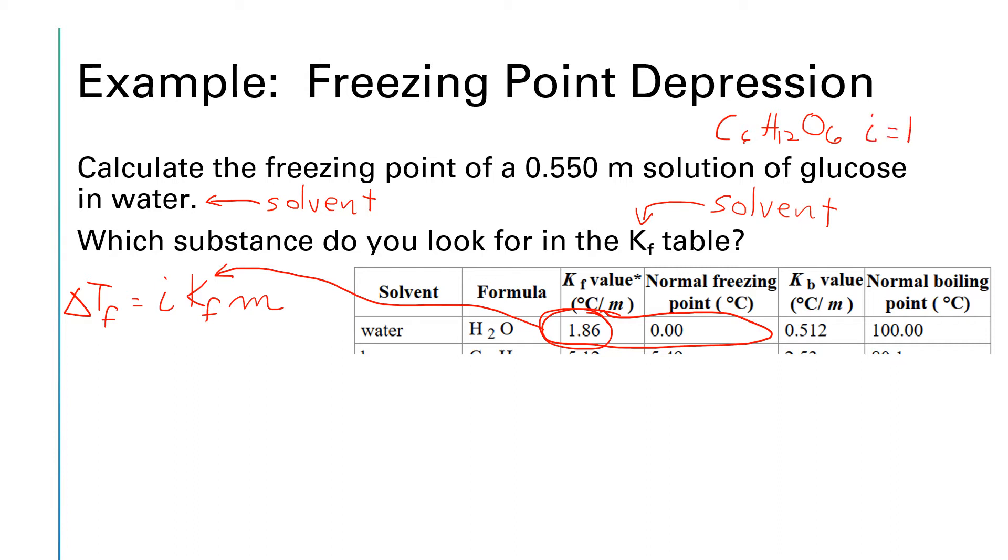Well, glucose is C6H12O6 which makes it a molecular compound or a non-electrolyte. So i is equal to one. When glucose dissolves for every one mole of glucose we get one mole of glucose particles because the molecule sticks together. So i is equal to one and the molality was given as 0.550.